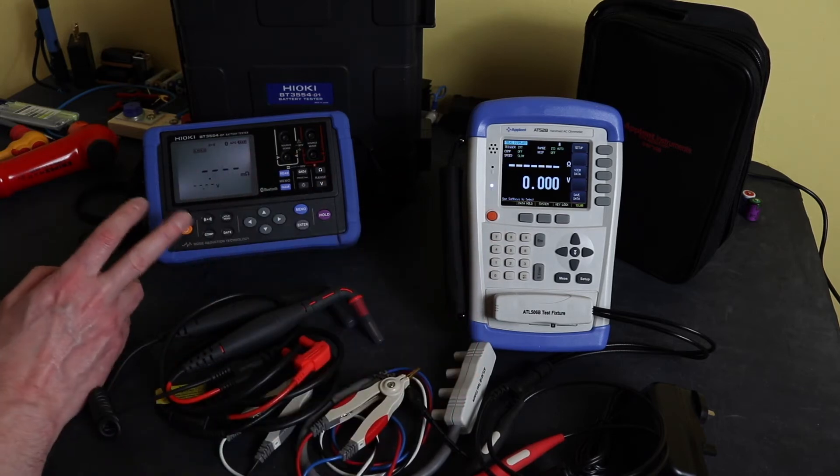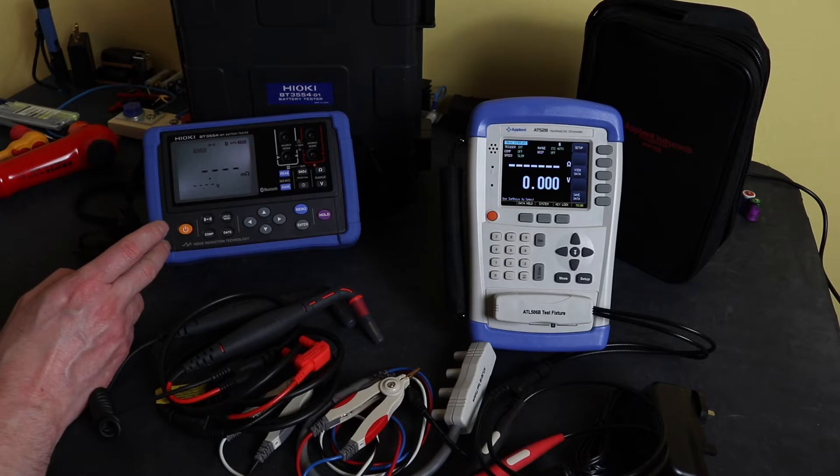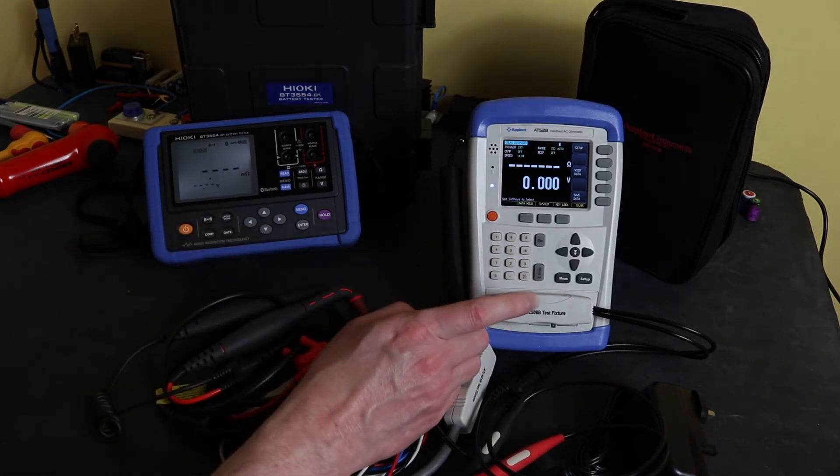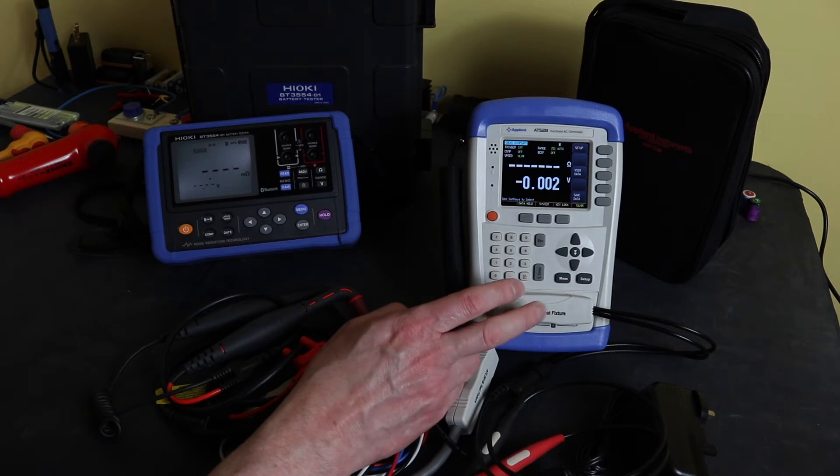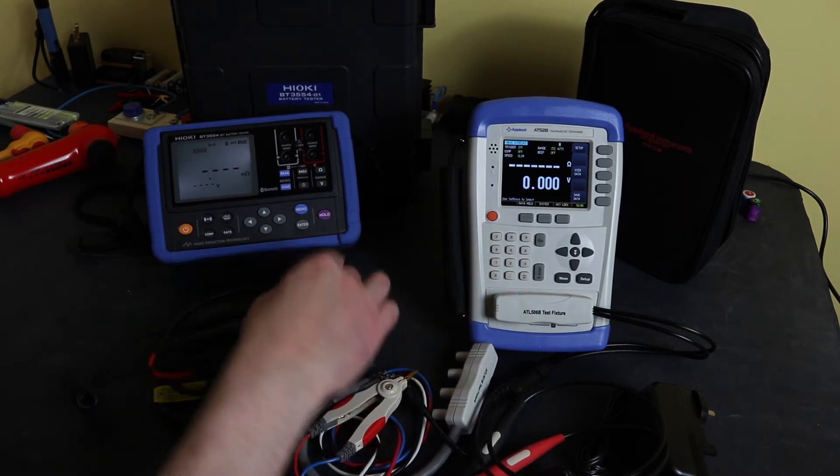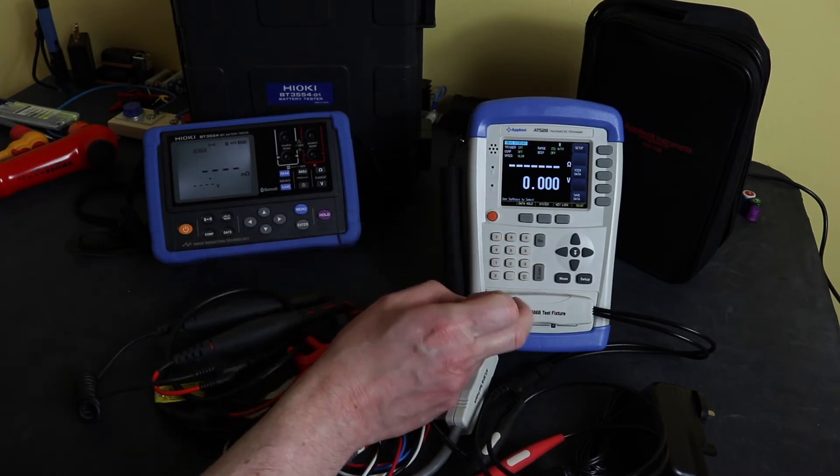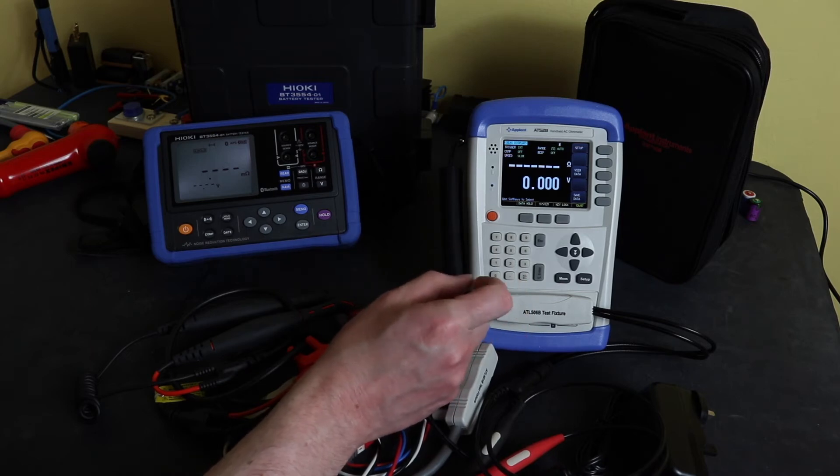So in terms of resistance measurements, this will measure from one micro ohm to three point one milli ohms, whereas the AT528 here will go from 10 micro ohms up to 2.2 kilo ohms. Tolerance wise, plus or minus 0.8 percent on this, 0.5 percent on this one, so slightly better tolerance claimed and a much wider resistance band.